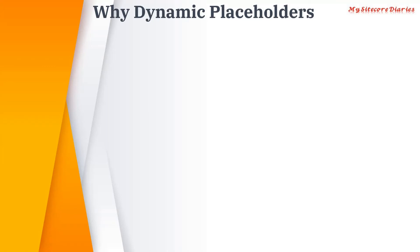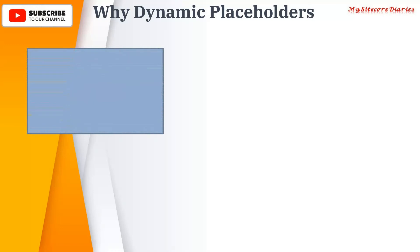Now, why do we need dynamic placeholders? There are two concepts: static placeholder and dynamic placeholder. What we have seen so far is the static placeholder — meaning if we say the key should be unique, that is a static placeholder. Let's take an example: we have a page where you want to add two rows and two columns, with a main body section as the first placeholder.